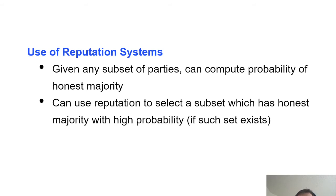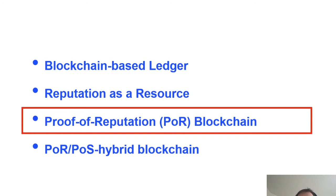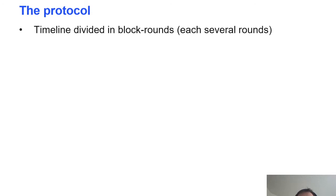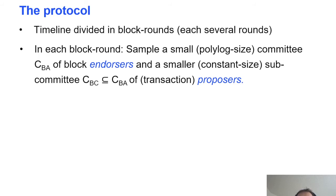The protocol construction is simple and elegant. The timeline is divided into block rounds, where each block round may span several protocol rounds, and in each round a block is proposed and agreed upon. At the beginning of each round, every party locally samples a small polylog-size committee of endorsers, and within this committee it samples an even smaller constant-size subcommittee of block proposers — say three or five. The parties then perform three steps to complete the block round.